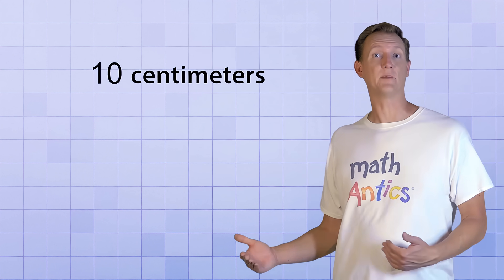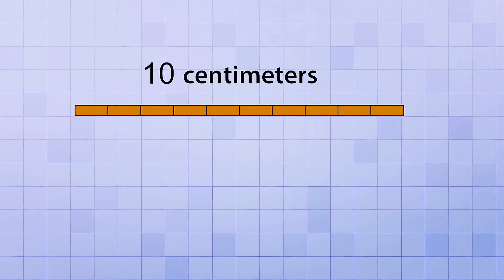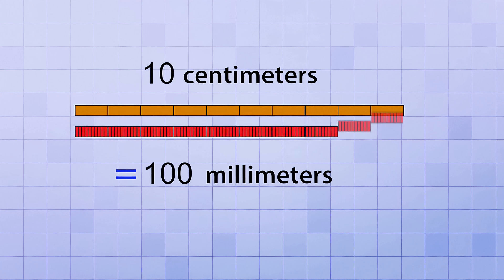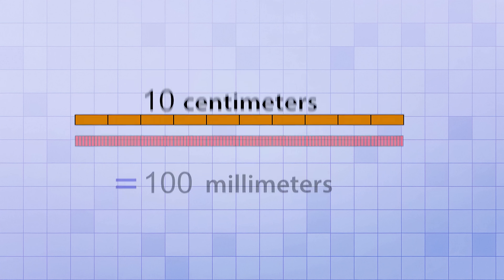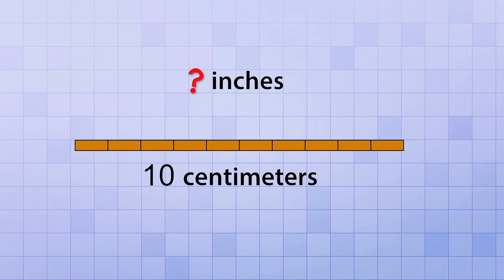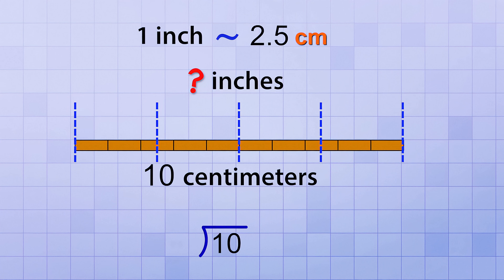Let's do another quick comparison, starting with 10 centimeters instead. If you have 10 centimeters, it's easy to see that it's equivalent to 100 millimeters since there's 10 millimeters in every centimeter. But what would that same distance be in inches? Well, an inch is bigger than a centimeter, and it takes approximately 2.5 centimeters to equal an inch, right? So if we divide the 10 centimeters up into groups of 2.5, which is the same as dividing 10 by 2.5, it forms 4 equal-sized groups.